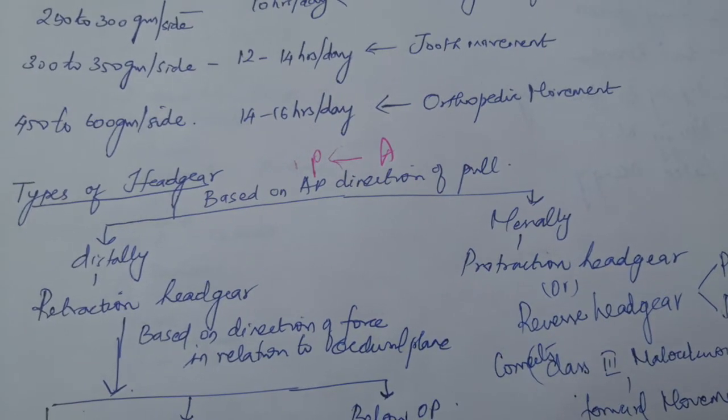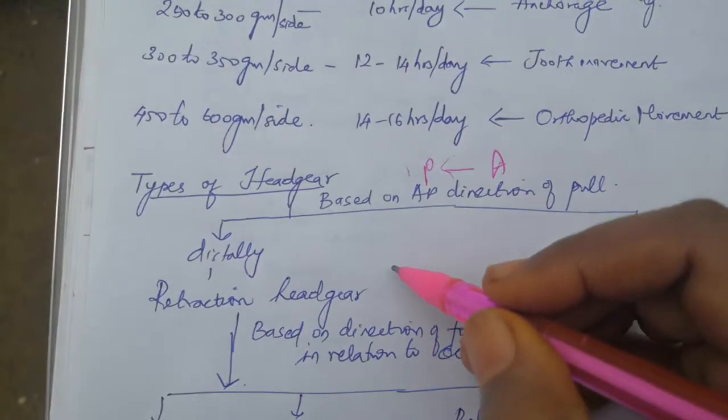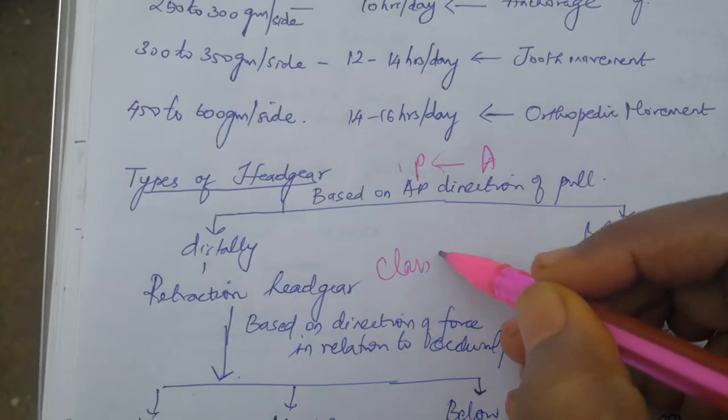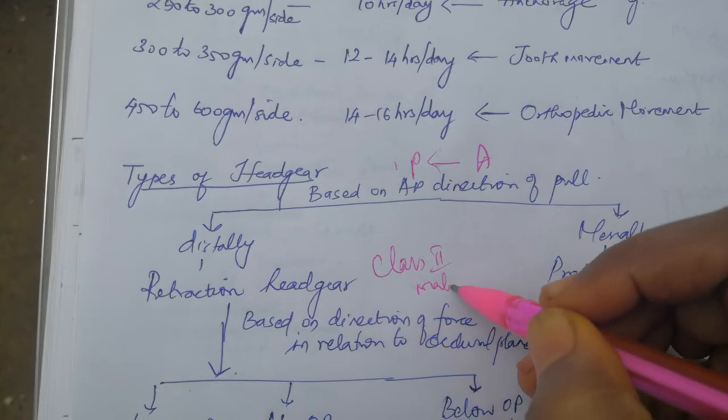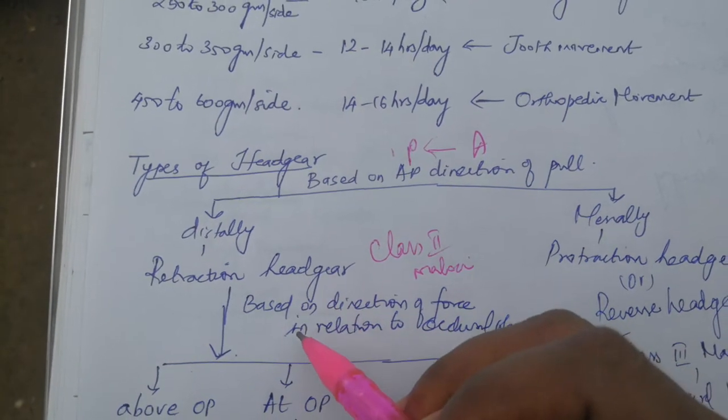First, we will come to the retraction headgear. This is mostly used in class 2 malocclusion. Based on the direction of force in this retraction headgear, in relation to the occlusal plane...